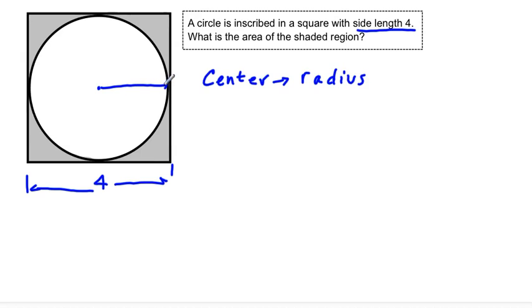When we have a circle inscribed in a square, notice that the side is equal to the diameter. If I attach two radii, what do I get? A radius of 2 and a radius of 2. That is equal to the side of 4 of the square.